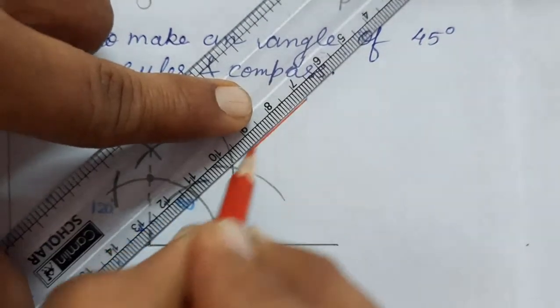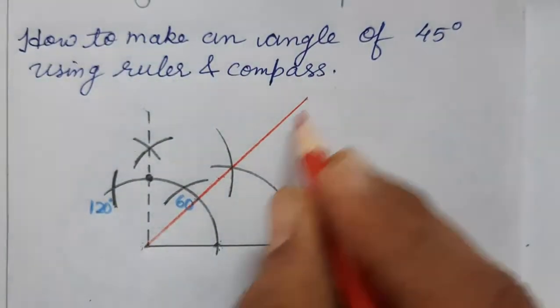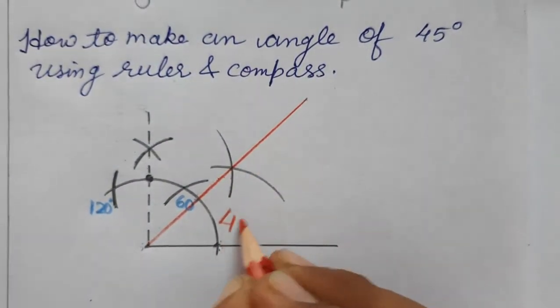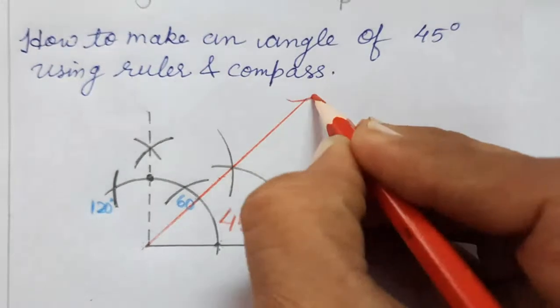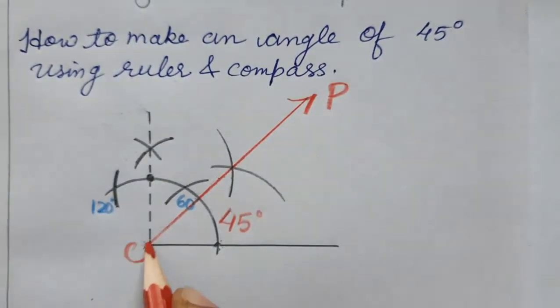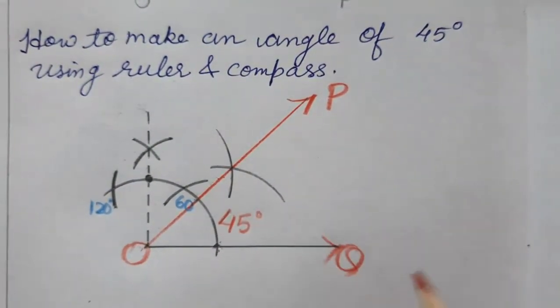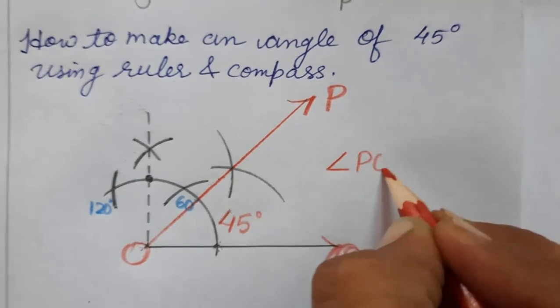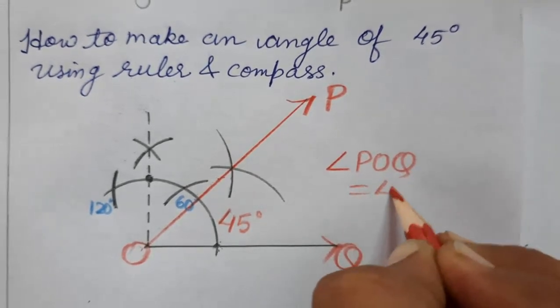We'll join it and I am joining it. So this is 45 degrees. This line we can name it - this is P, this is O, this is Q. This angle POQ is 45 degrees.